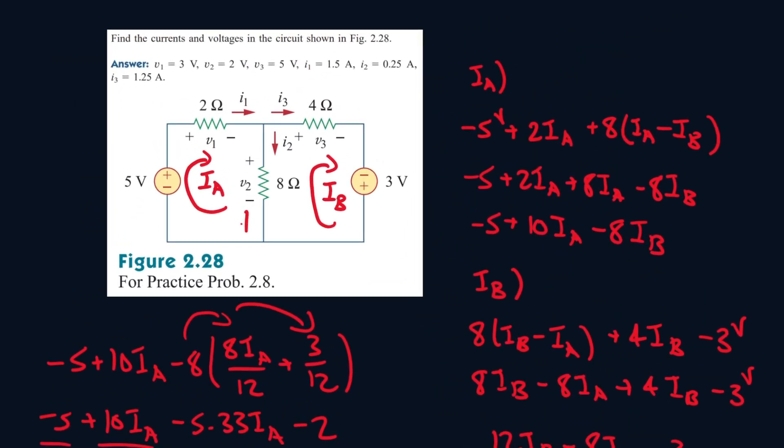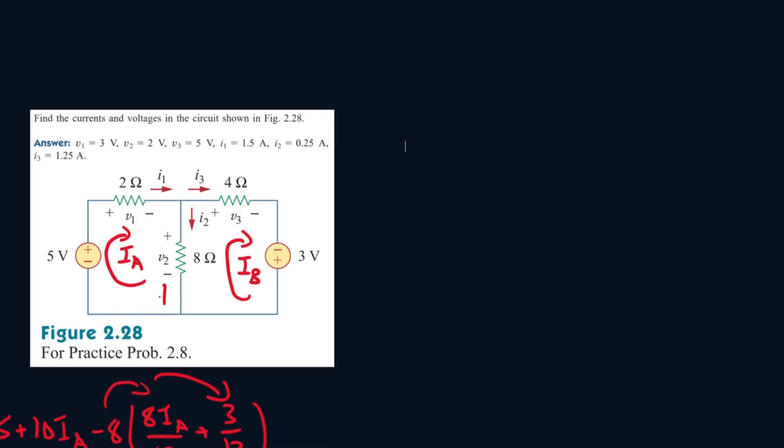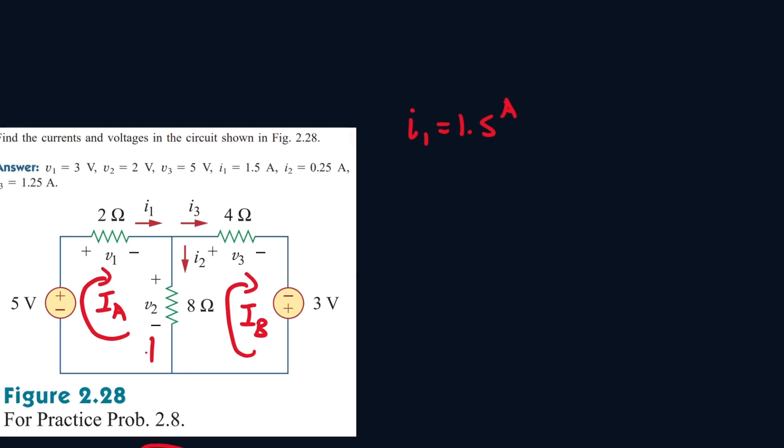So since IA is 1.5 and it's moving in this direction, which is the direction I1 is moving in, I1 will also be 1.5. So let me erase all of this so we can jot it down. I1 is 1.5 amps. Now, we see I3 is moving in the same direction as IB, and IB was 1.25 amps, so I3 will also be 1.25 amps.